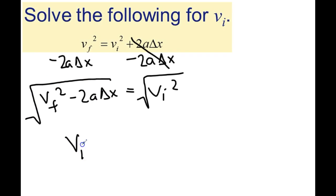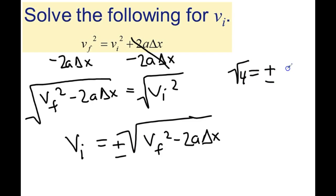So v sub i equals square root of v final squared minus 2a delta x. And that square root can be plus or minus because you might recall that square root of 4 equals plus minus 2. And that's where the plus minus comes from.